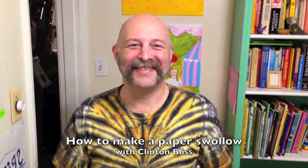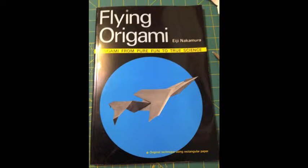Hi, this is Clinton Bliss. I'm here to show you how to make a flying paper origami swallow. It's right here. The design for this is from the book Flying Origami by Eiji Nakamura.